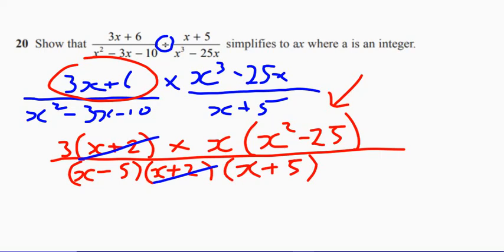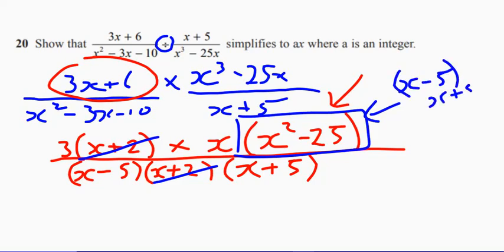Now, the next trick is looking at this part here. And yes, it's difference of two squares. So this part just here will give us x minus five multiplied by x plus five.